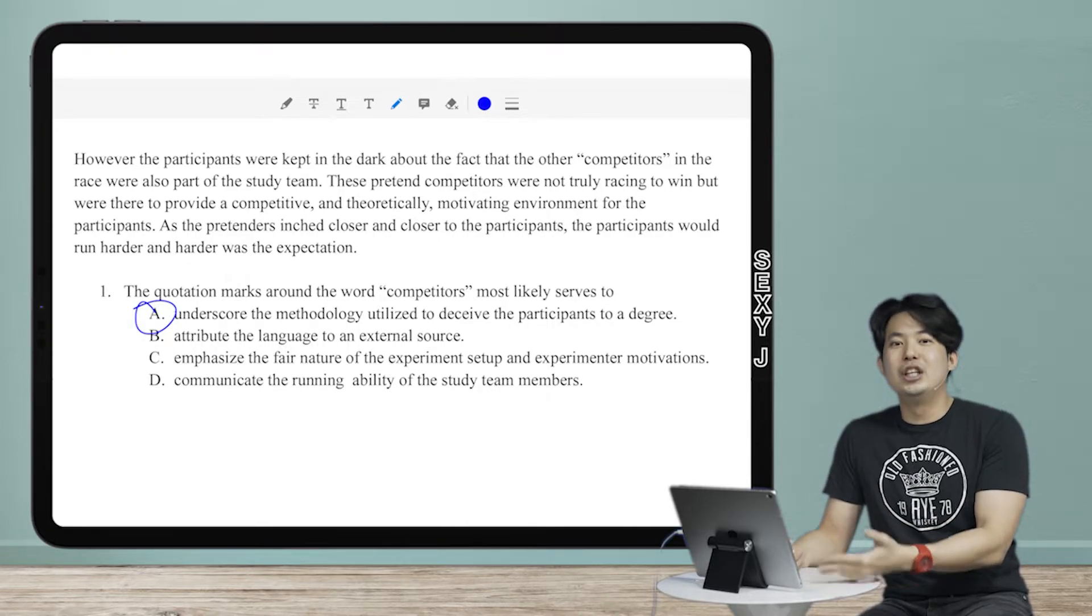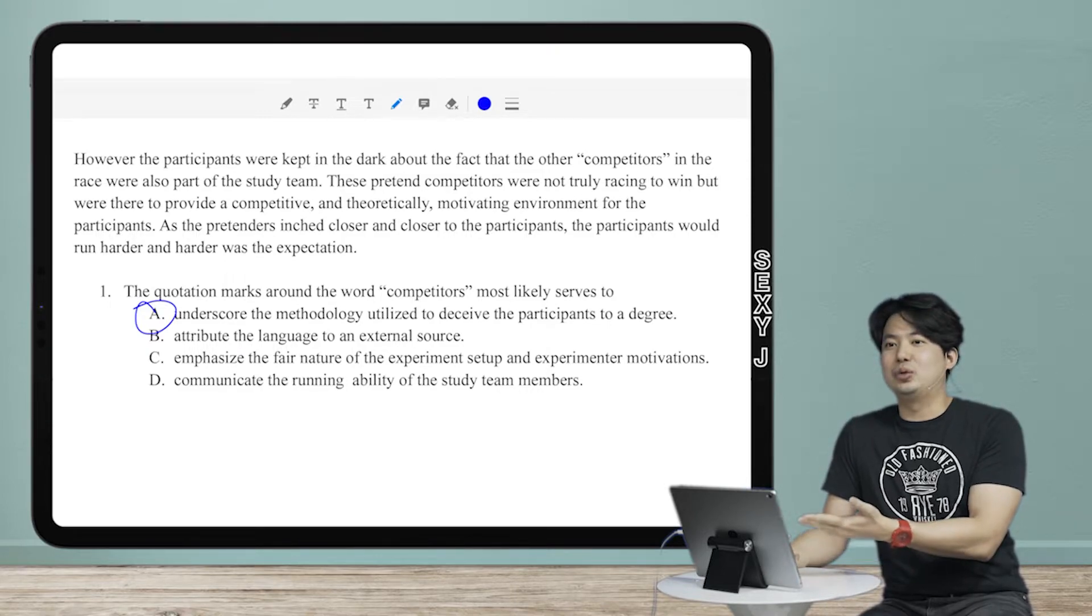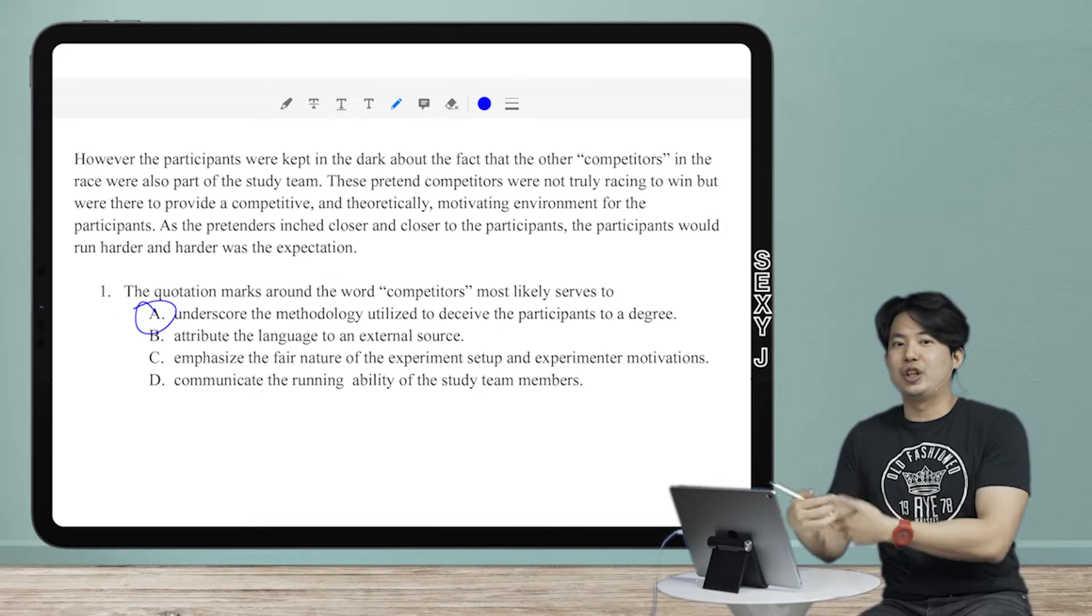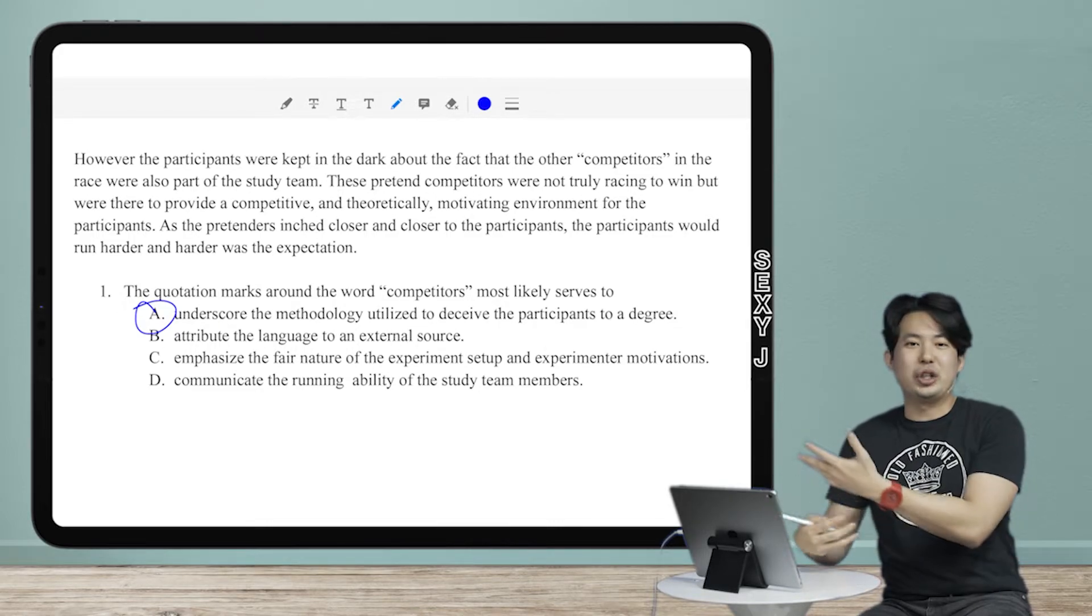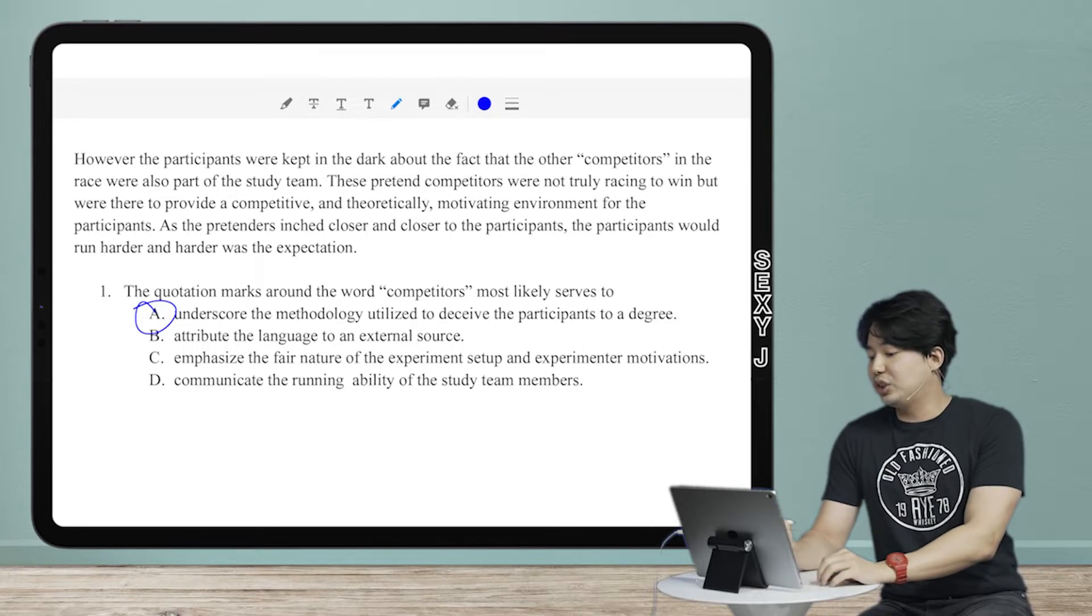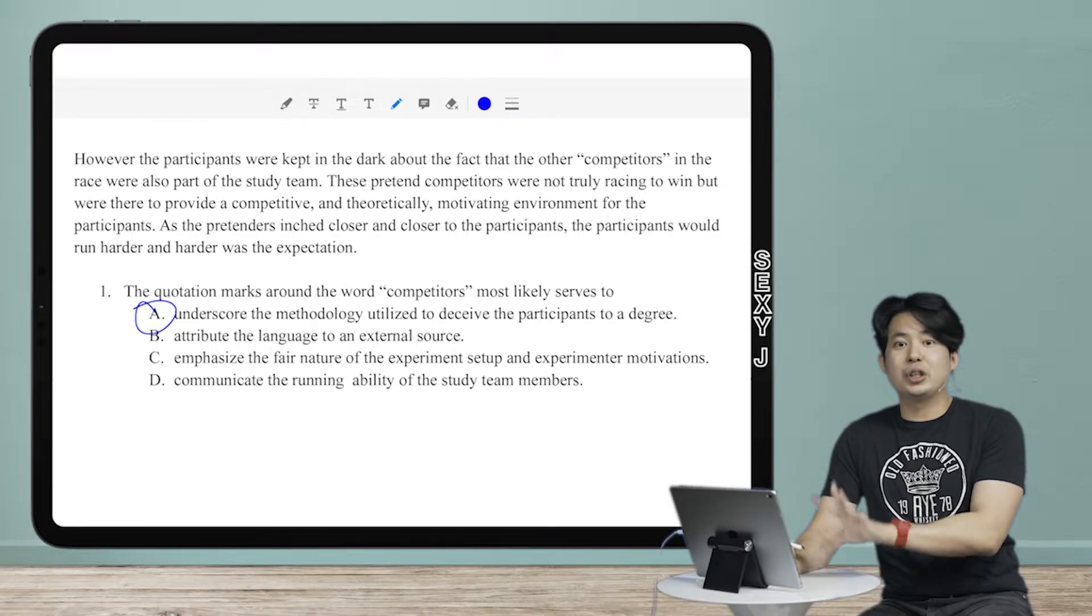Underscore the methodology utilized to deceive the participants to a degree. Look how terrible that wording is, right? If you guys wrote like that in English class, I mean if your English teacher likes that, I don't have high hopes for that class. That is not the way you should write. That is unnecessarily roundabout and trying to use fancy language, but they disguise the correct answers like that, right? So what does this even mean? Emphasize how they tricked the participants.